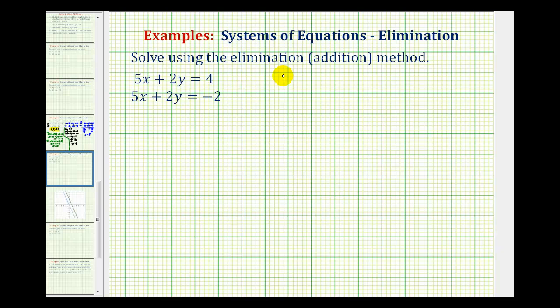We want to solve the system of equations using the elimination method, sometimes called the addition method. To solve a system of equations, we're looking for an ordered pair, an x and y value, that would satisfy both equations.